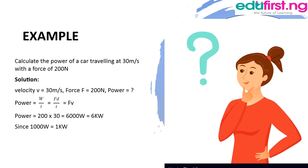Example: Calculate the power of a car traveling at 30 meters per second with a force of 200 Newtons. Solution: given velocity equals 30 m/s and force equals 200 Newtons. Power equals work over time, which equals force times distance over time, which equals force times velocity. Therefore, power equals 200 times 30, which equals 6000 Watts. This can be converted to 6 kilowatts, since 1000 Watts equals 1 kilowatt.